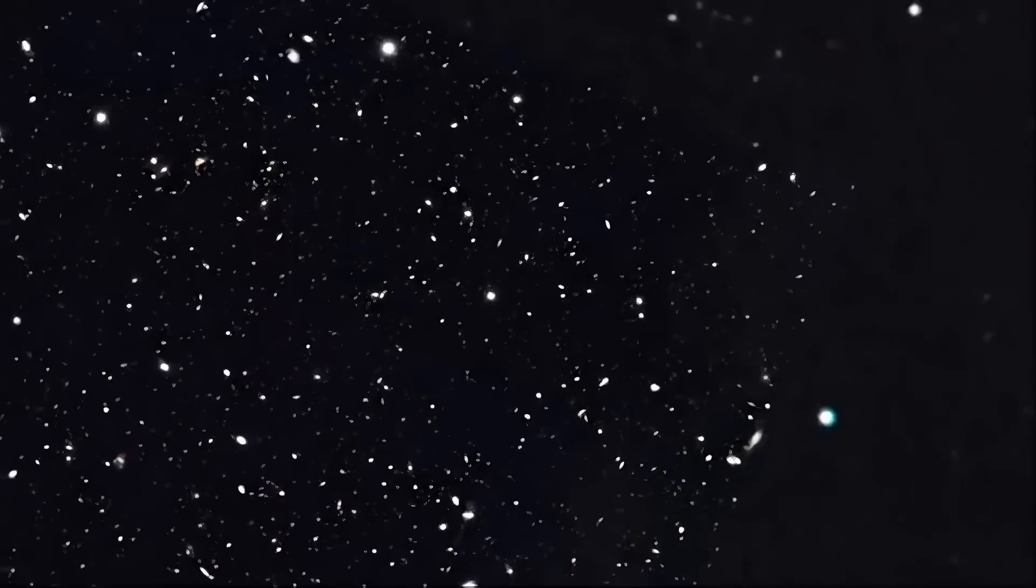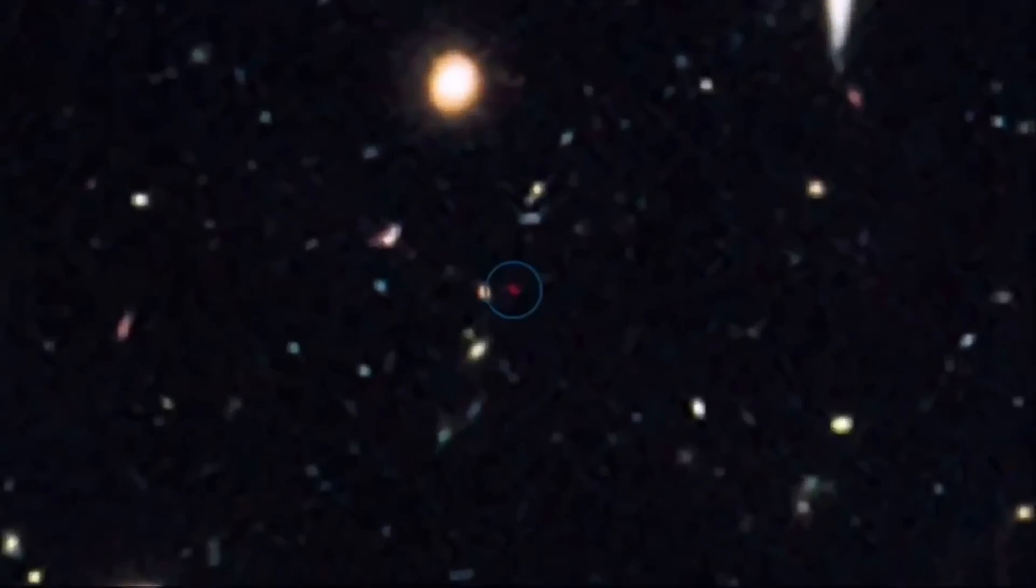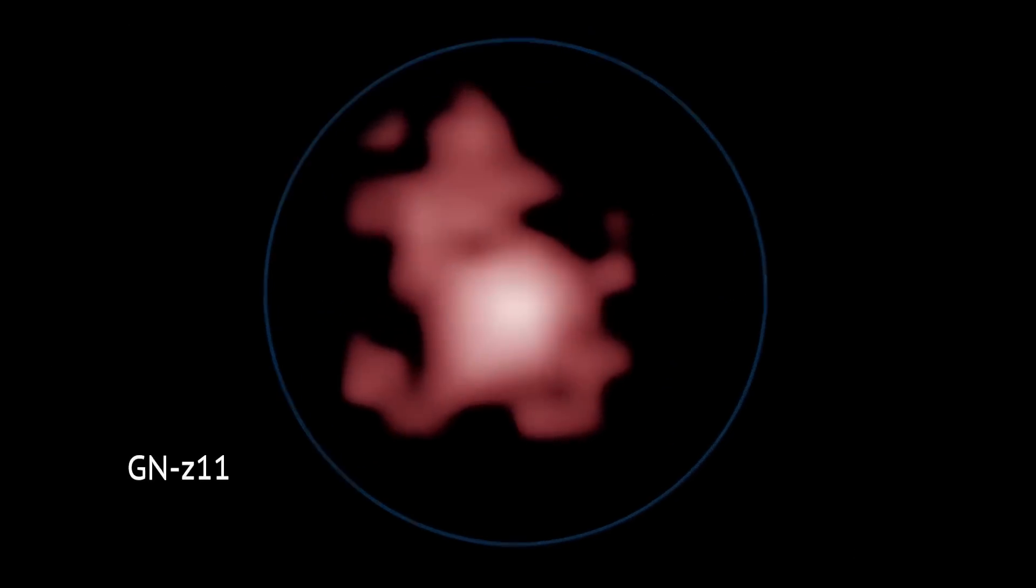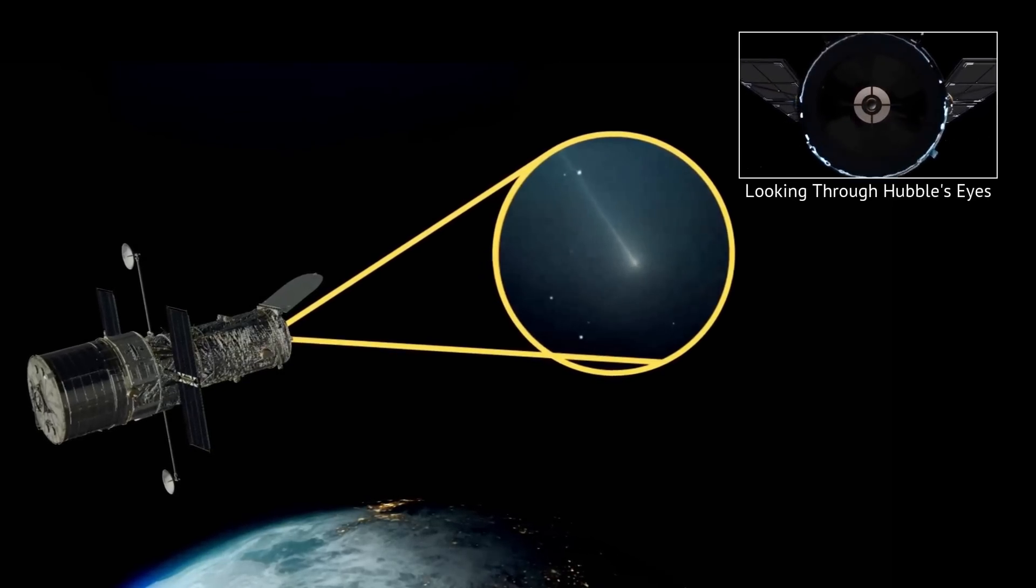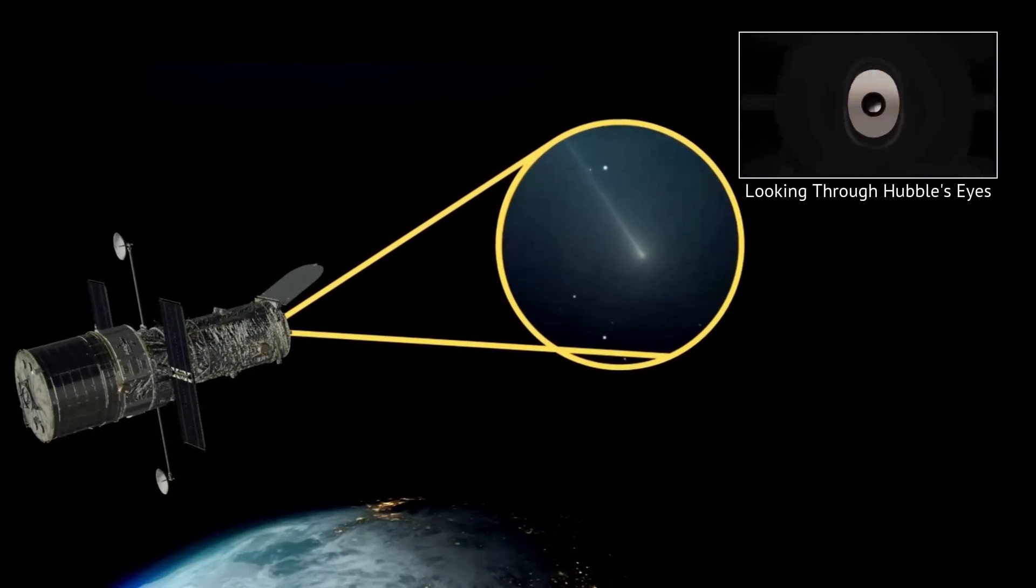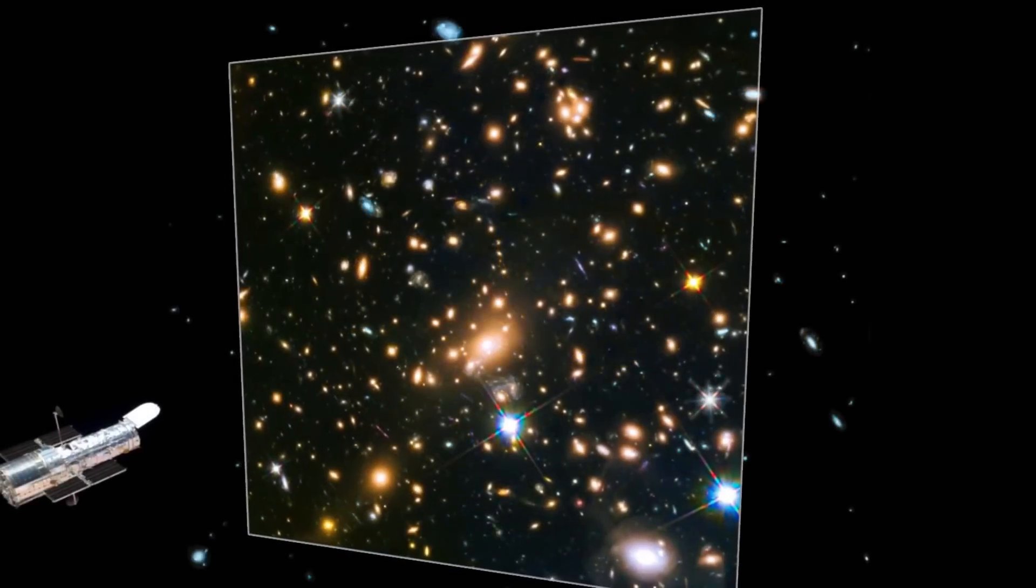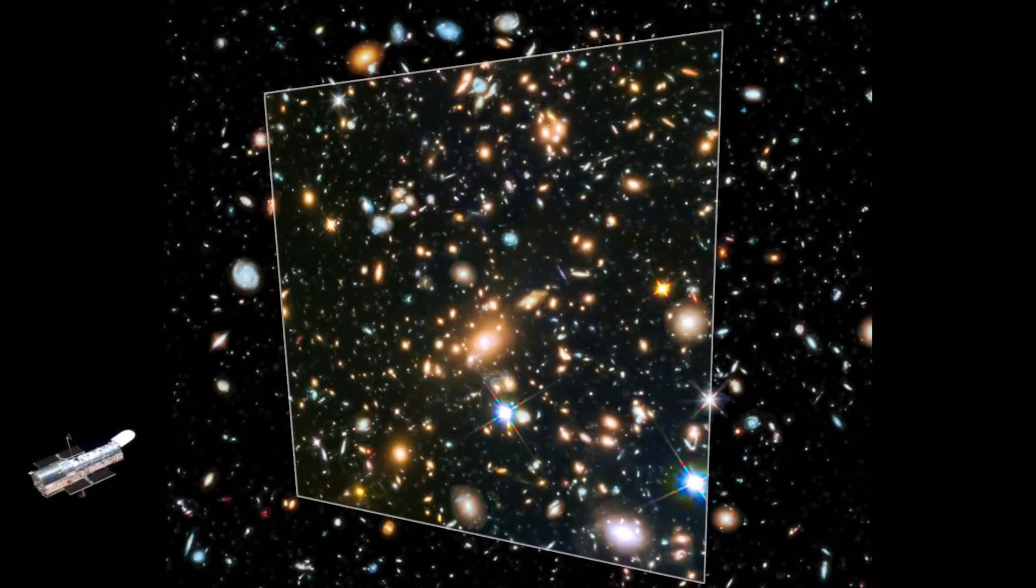Up until 2022, the most distant galaxy we'd ever seen was GN-Z 11, spotted by the Hubble Space Telescope. It was a landmark discovery. Hubble with its 2.4 meter mirror and incredible optics had taken us deep into space. But there was a limit to how far it could see.